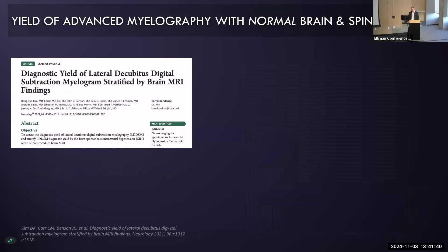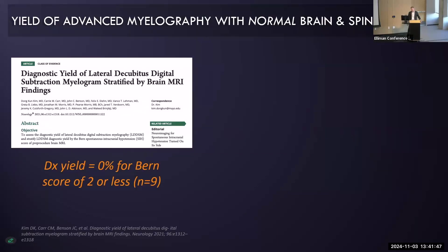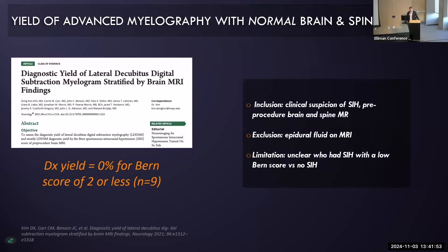A smaller study from the Mayo Clinic — as Dr. Sheving mentioned — looked at people with a burn score of 2 or less. In that much smaller number, they found 9% and didn't find any venous fistulas in that population. A limitation is that this research question didn't exactly address how often fistulas occur in patients with a negative brain MRI; it was just patients with low burn scores.